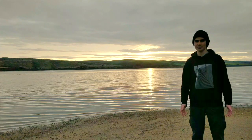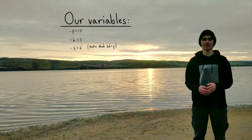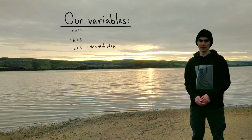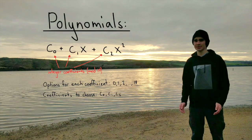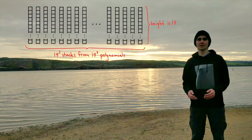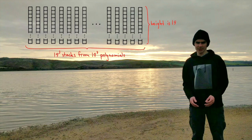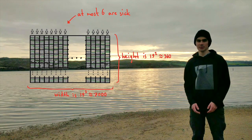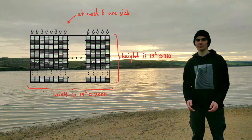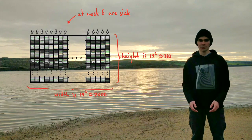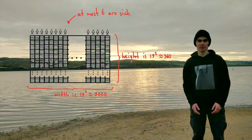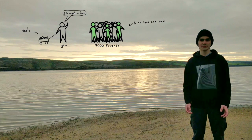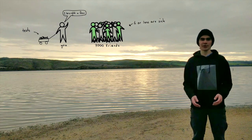Let's look at a specific example. Let's choose the prime P to be 19 and the number K to be 3. Then we can choose T equals 6 because K×T = 18 is still less than P = 19. We can create 19³ different polynomials of degree less than 3. Using them, we can form 19³ stacks of height 19, then expand the numbers into mini-stacks to get a grid of height 19². So we have created a strategy for finding 6 sick people out of a group of 19³ people with only 19² tests. 19³ is approximately 7,000, and 19² is about 361. So this is a way better solution for finding which of your friends are sick!